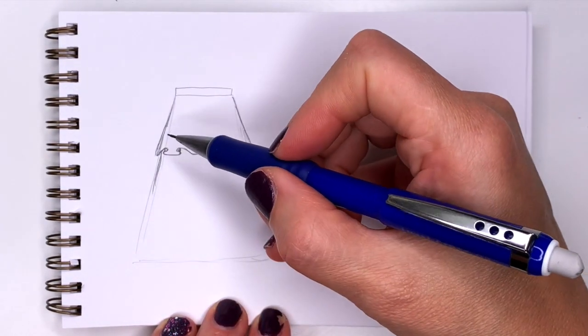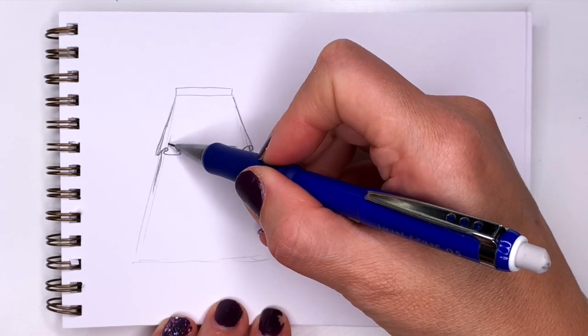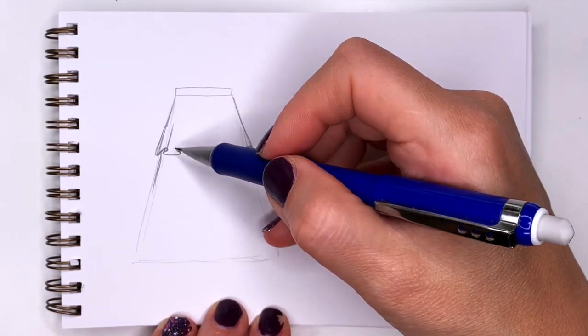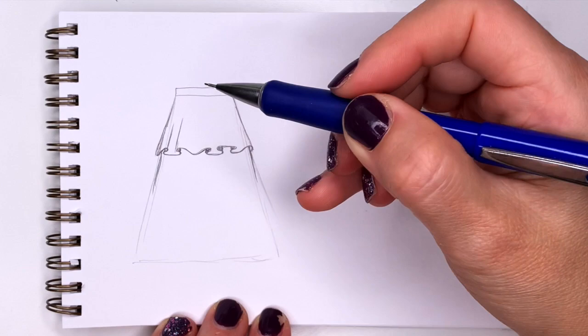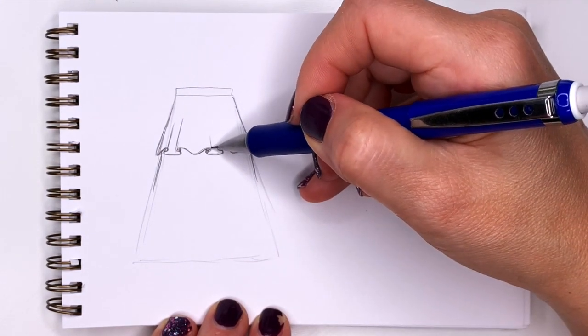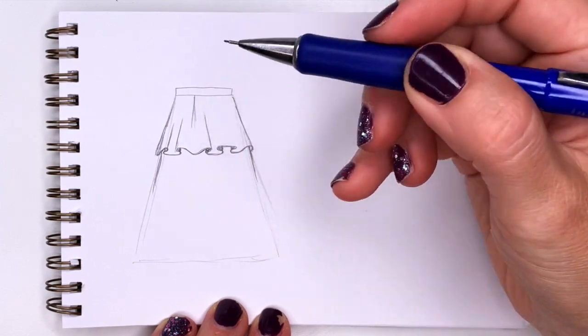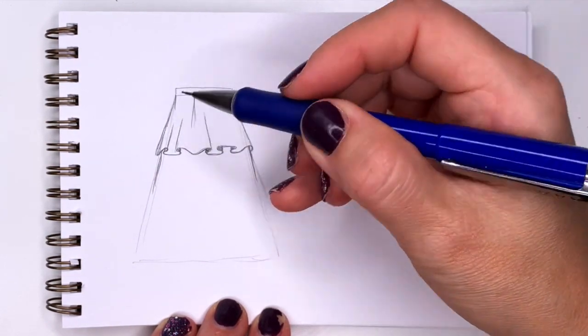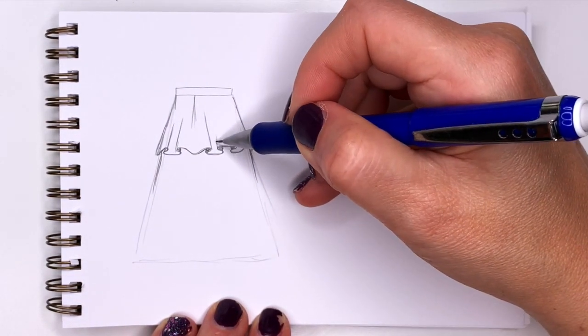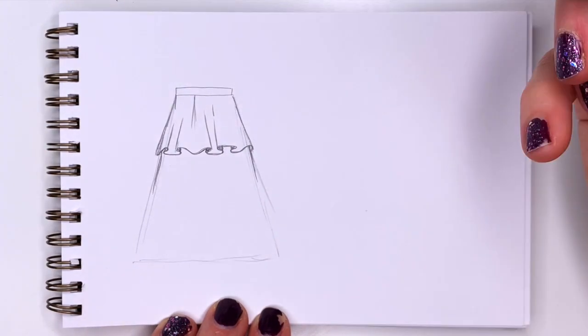Now we can also add some lines going to the top of the skirt. That will show the folds, and some coming down and some can break off like this.